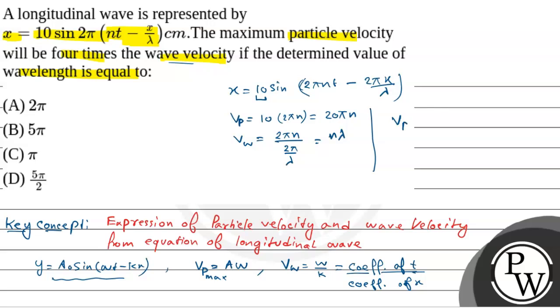Now question has given that vp is equals to 4 times vw. So 20π n is equals to 4 into nλ.